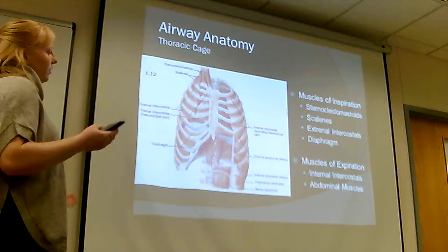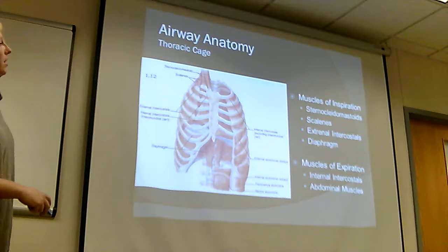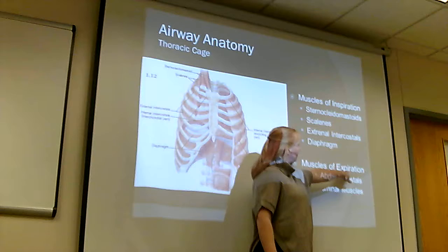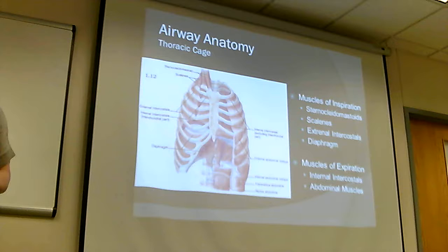A way to remember which intercostals do what: they're opposite — external intercostals for inspiration, internal for expiration. That's actually a popular stump question in anesthesia. The muscles of expiration are the internal intercostals and the abdominal muscles. The intercostals and the diaphragm work all the time when you breathe; the others — sternocleidomastoid and scalenes — are for forced inhalation.